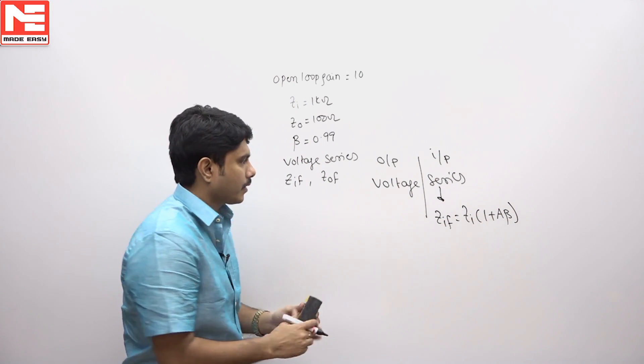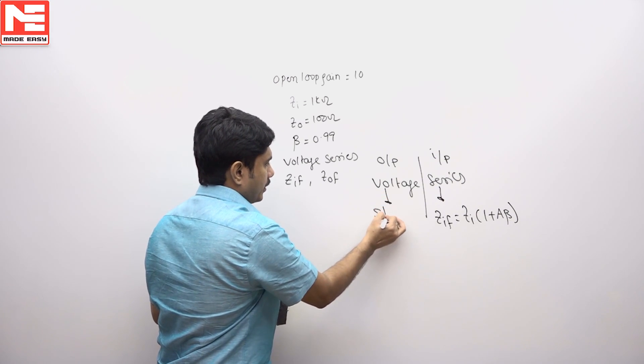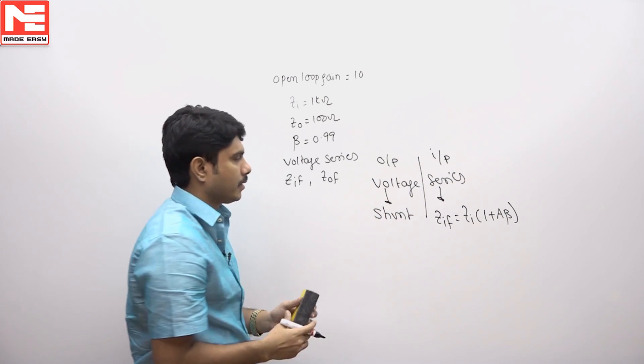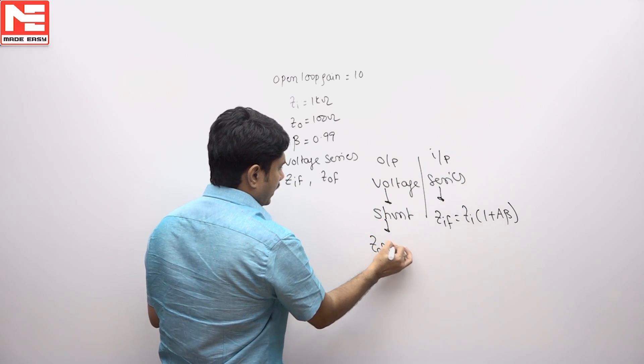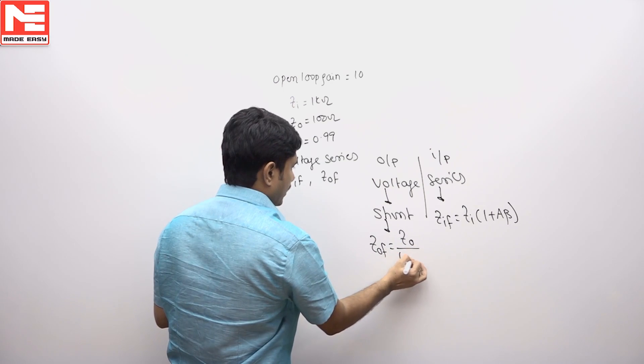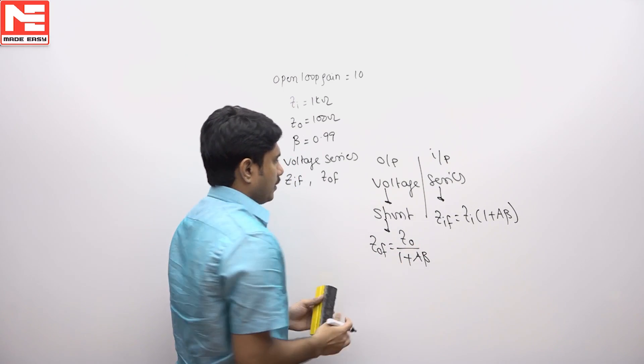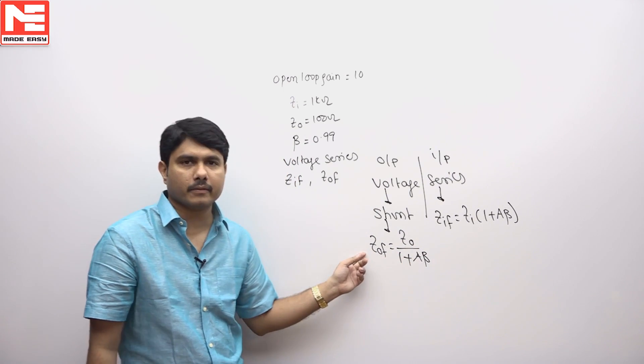Now, for voltage topology, voltage can also be called shunt. Shunt type systems always have degraded output impedance, which is Z0 divided by (1 plus A beta). These are the two formulas we have to apply.